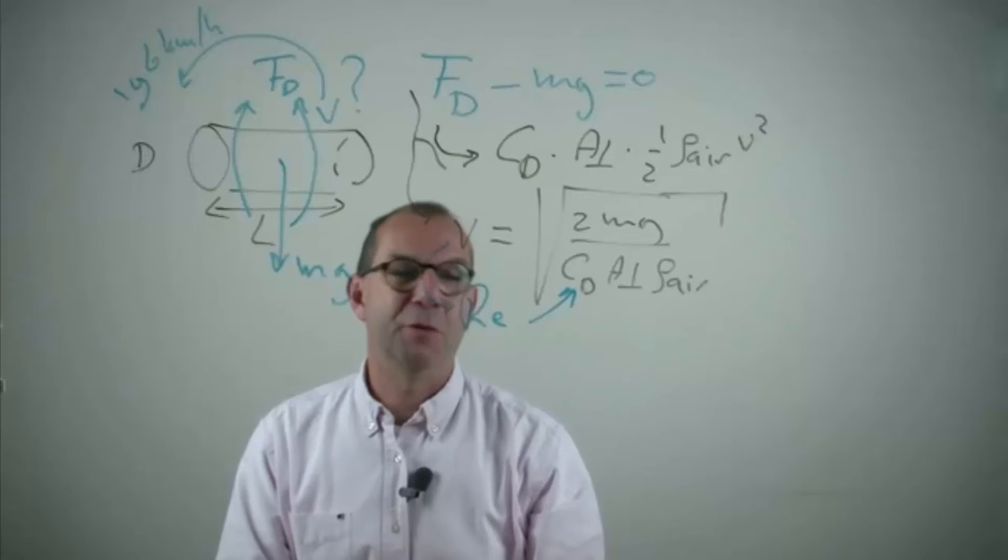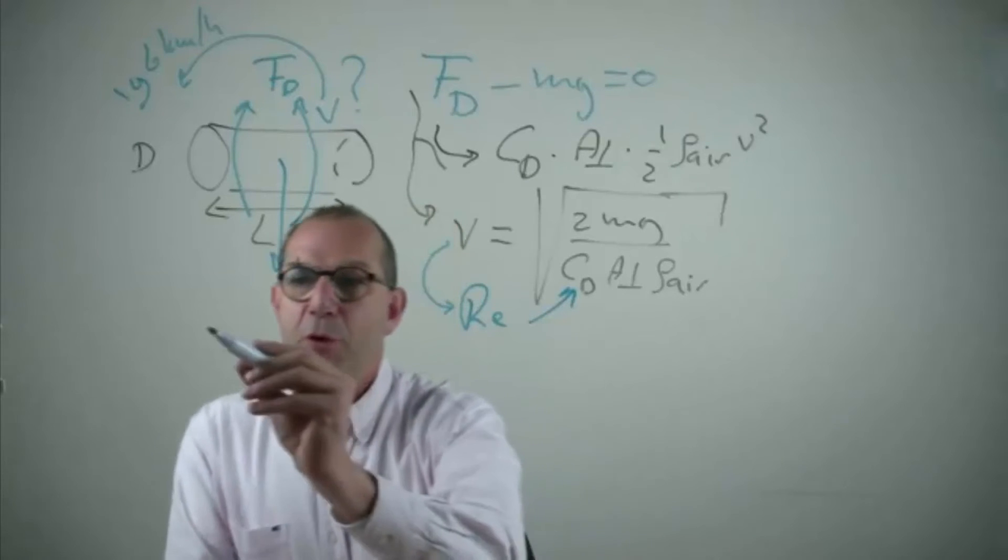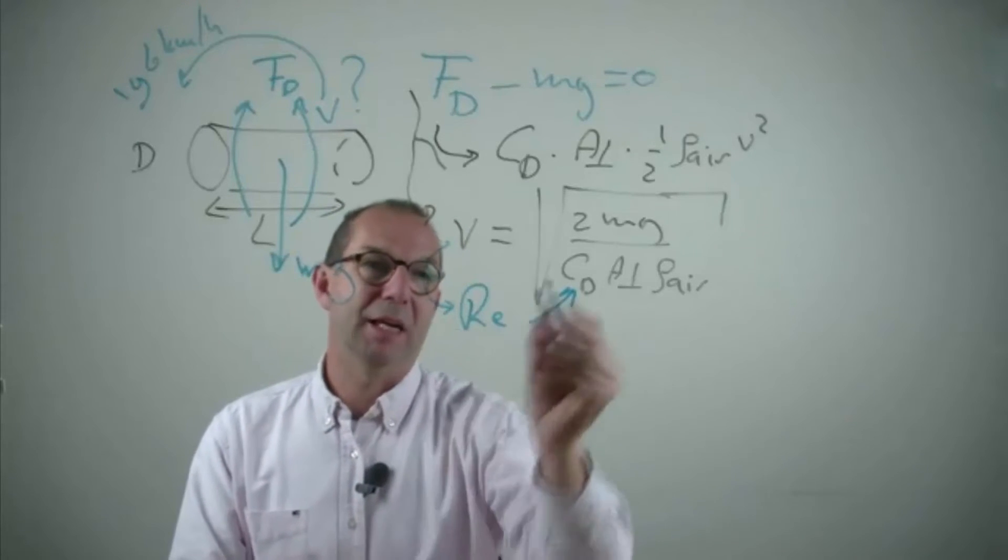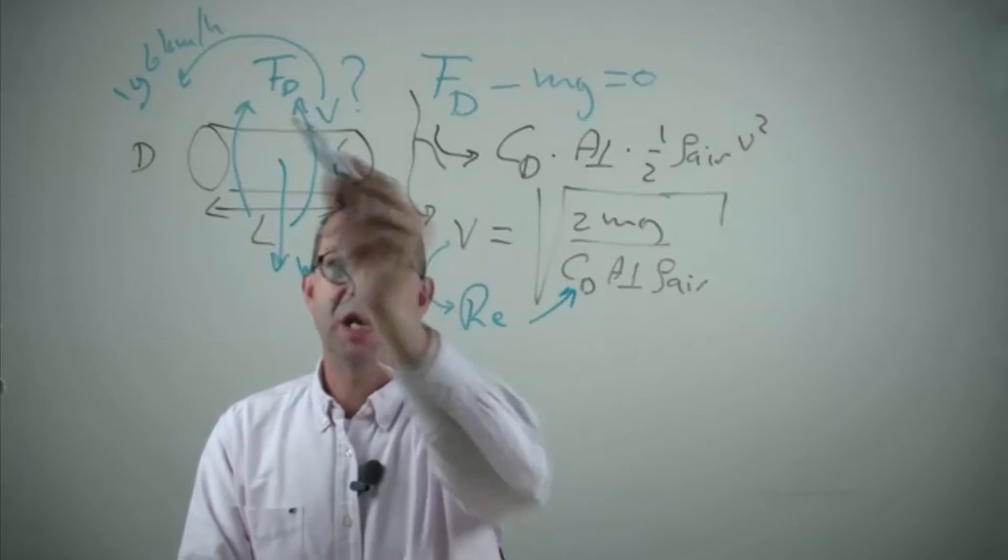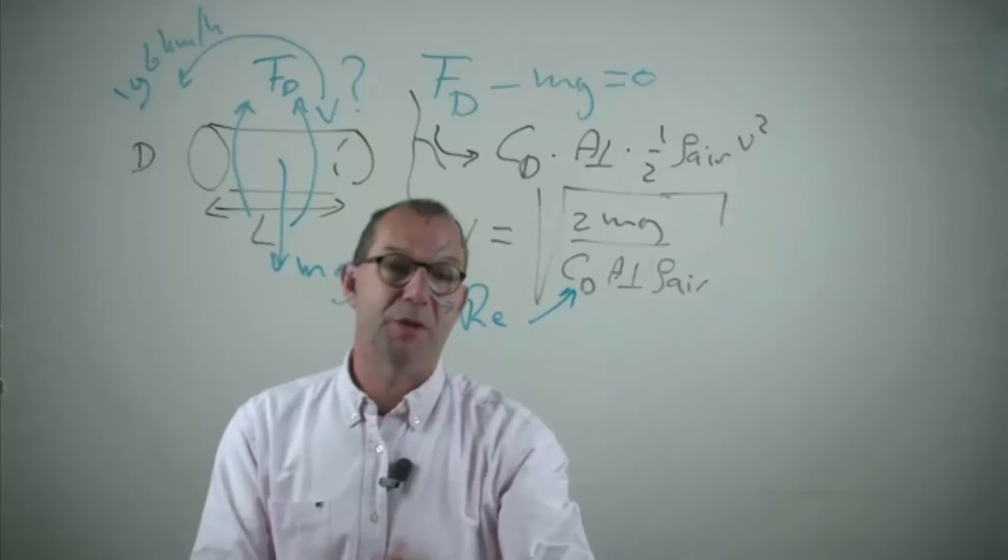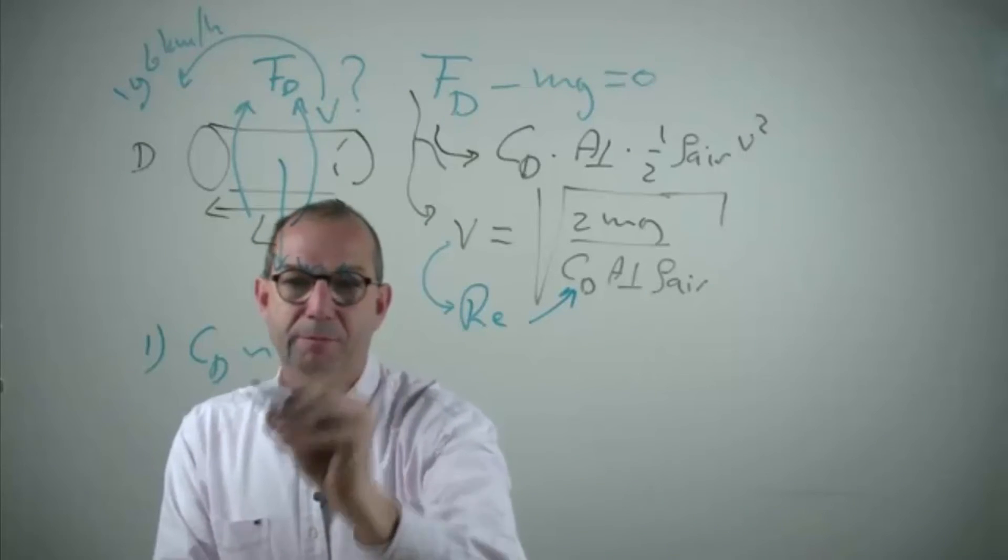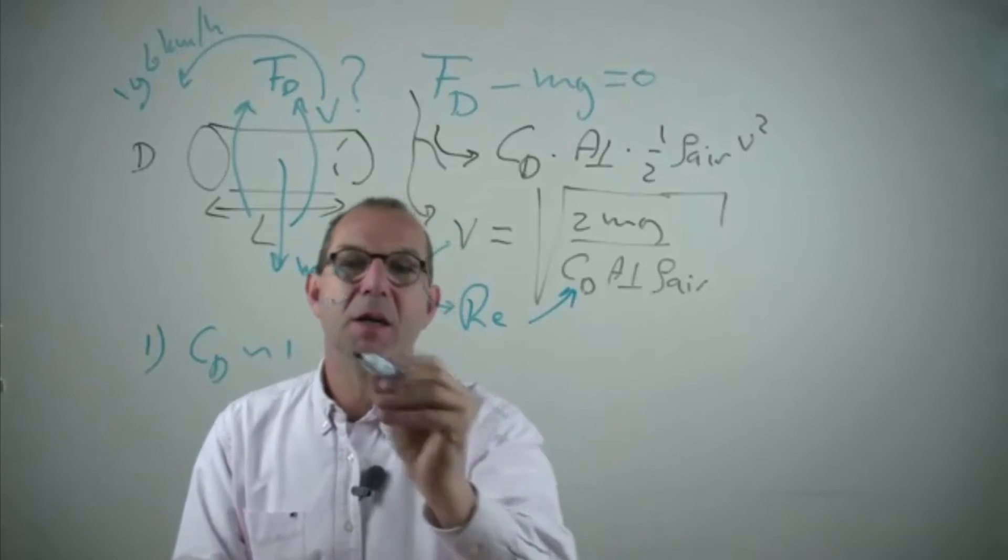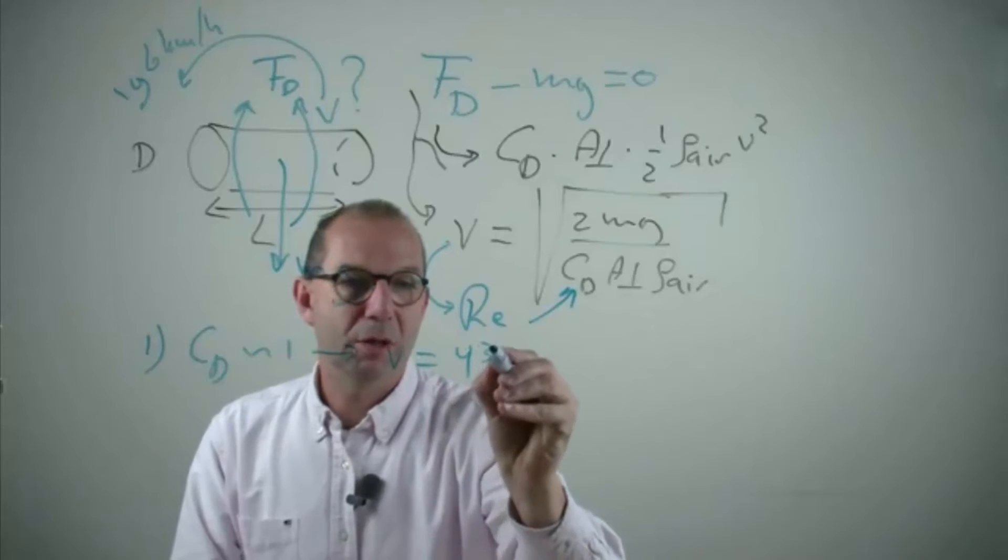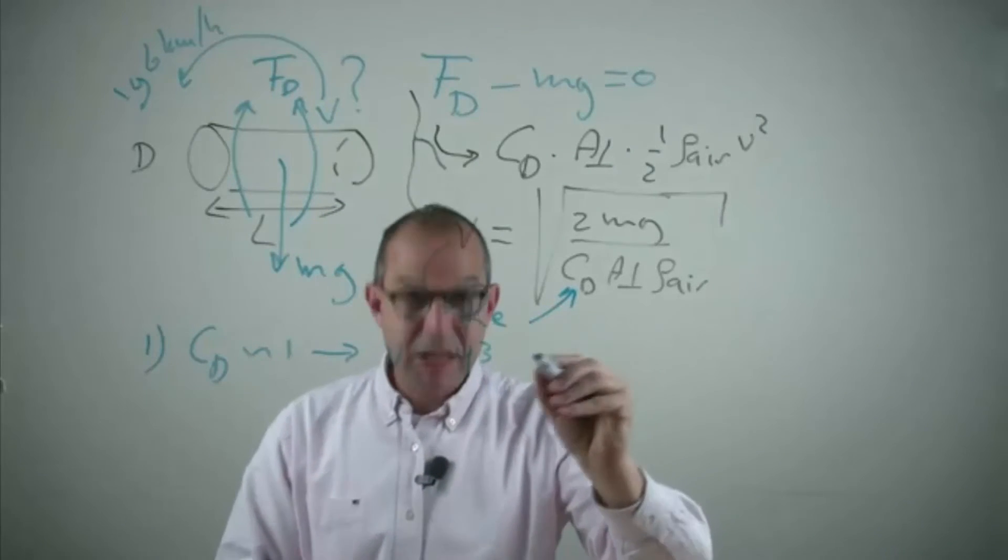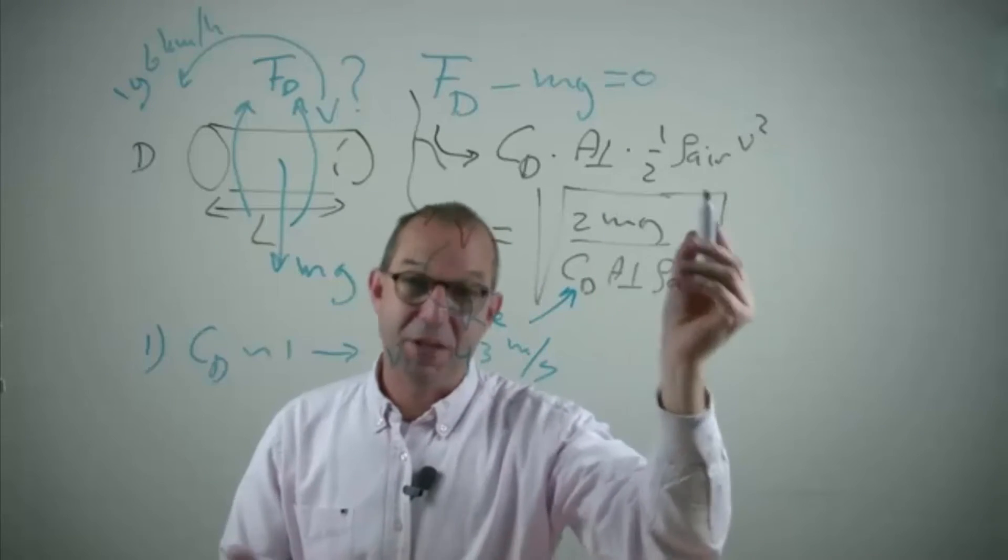But the solution is pretty straightforward. We start up an iterative process. What we first do is we make a wild guess of what this CD will be. We anticipate that the velocity is high, the scale is relatively big, Reynolds numbers are relatively high. So the first guess is take CD order 1. That's not accurate because we don't know where we are. But it allows us to compute the velocity. And that gives 43 meters per second if you fill in all the numbers here and estimate my weight.